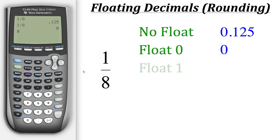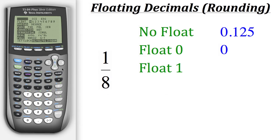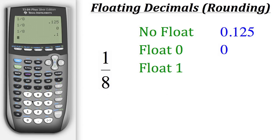Now let's try another float setting — what if we change it to show only one decimal? We'll go to mode, float, and this time turn on one. When we do one divided by eight, we get an answer of 0.1.